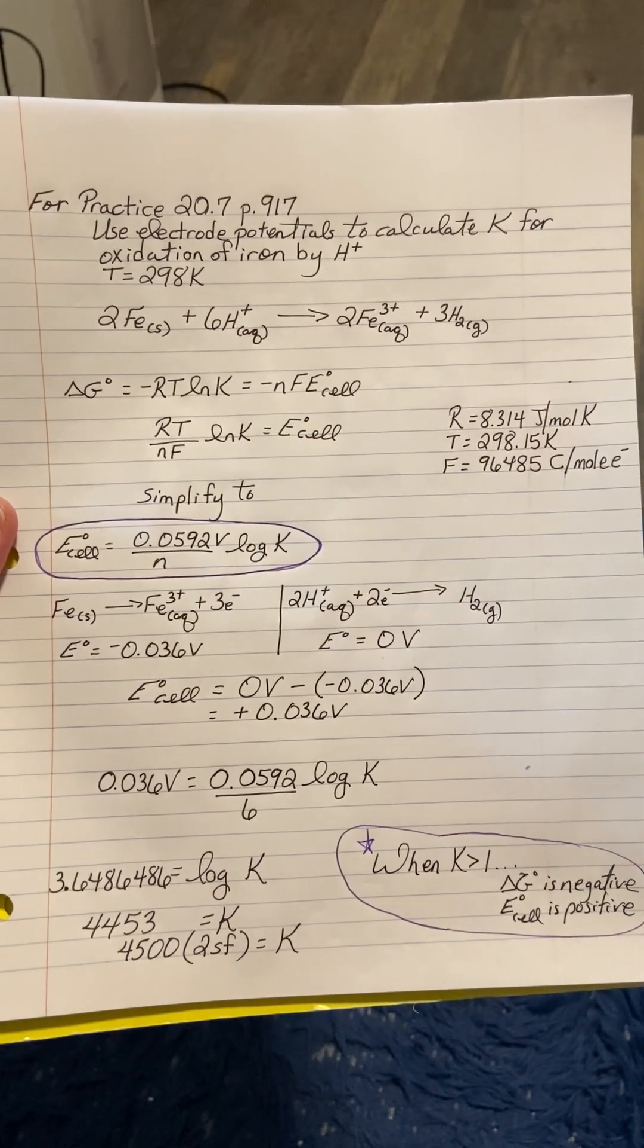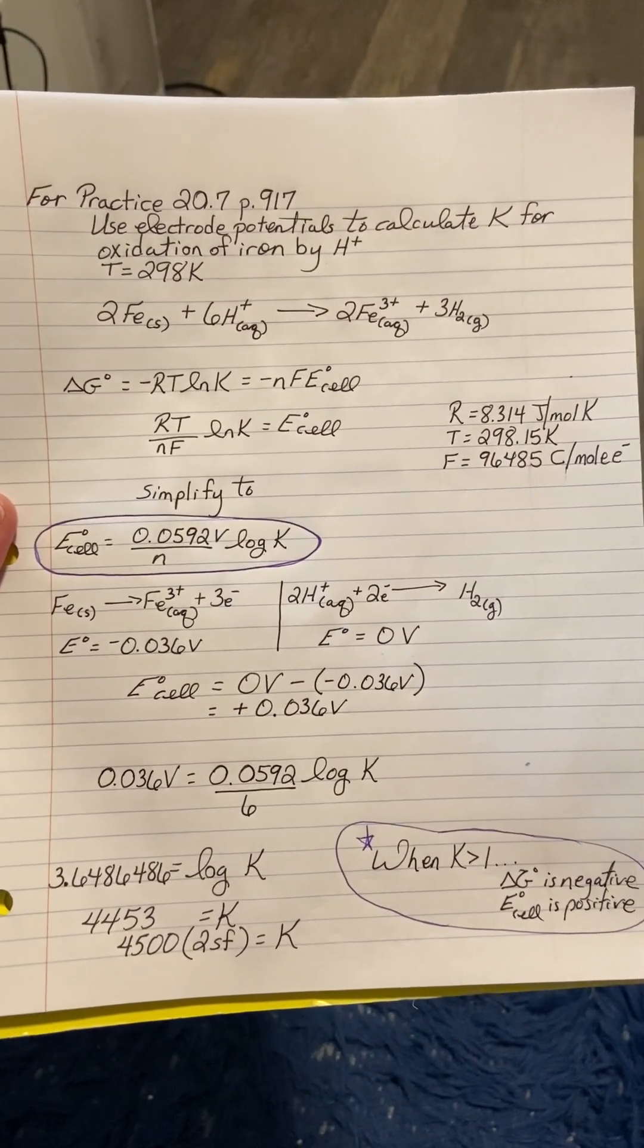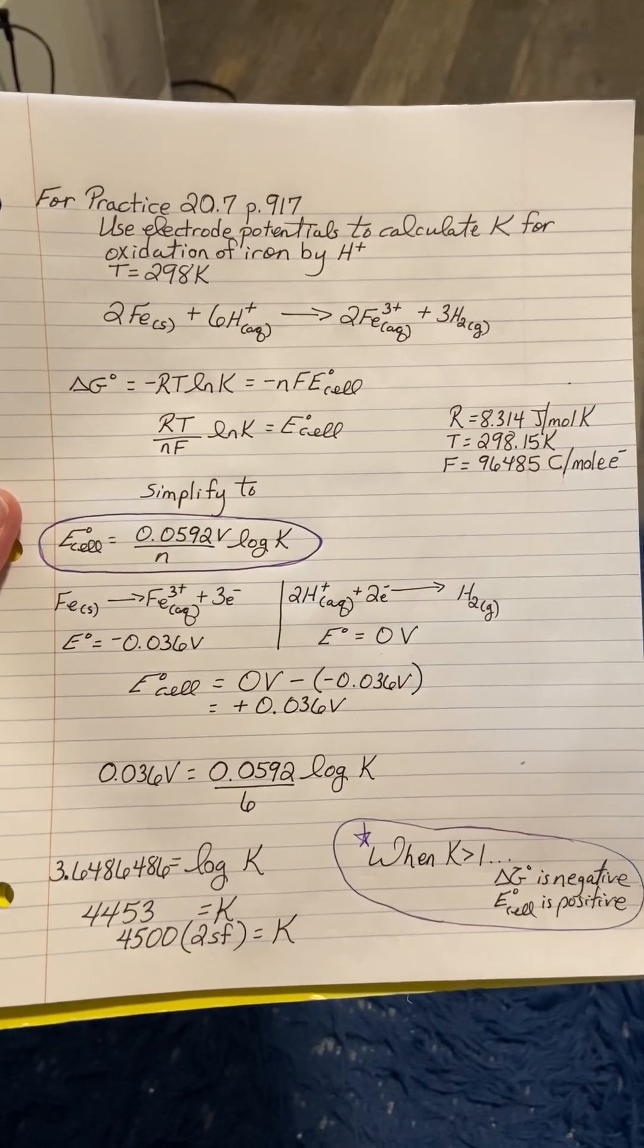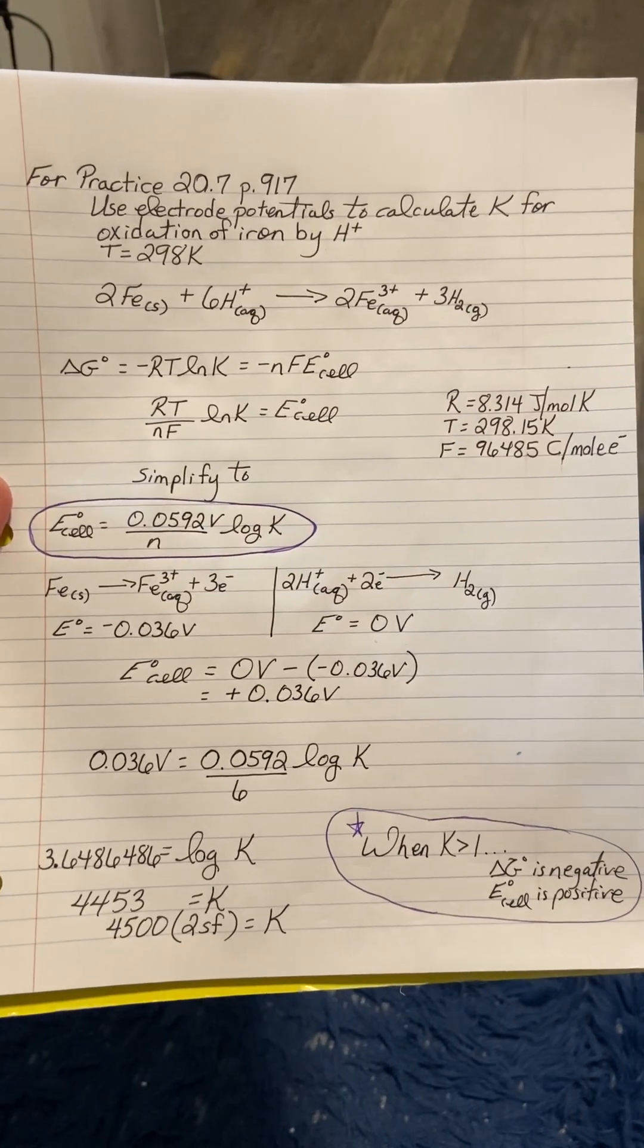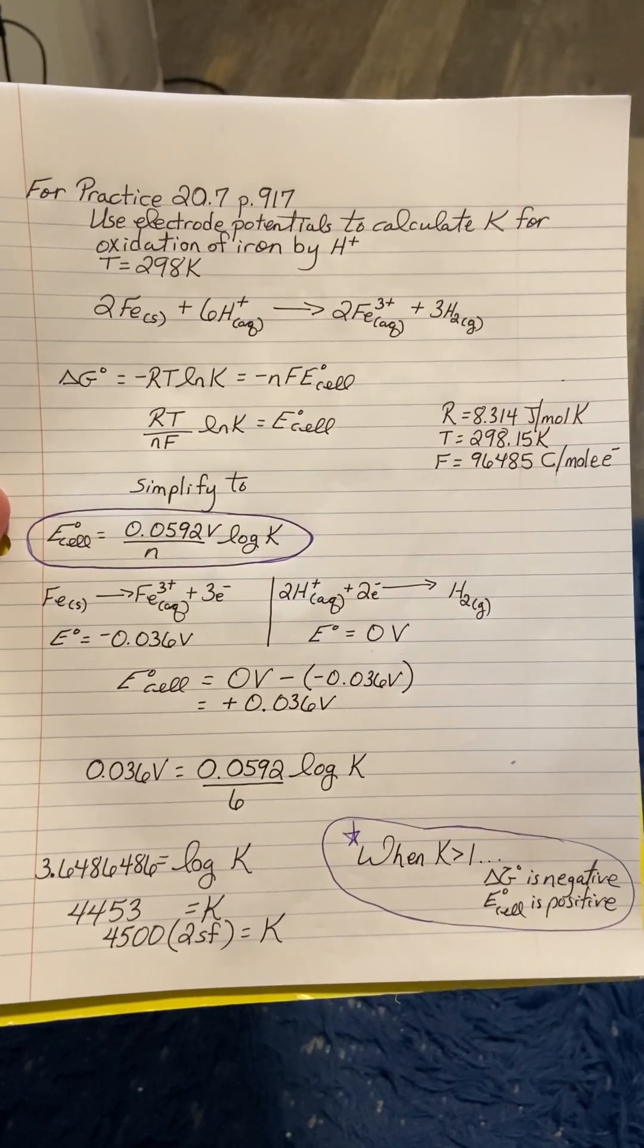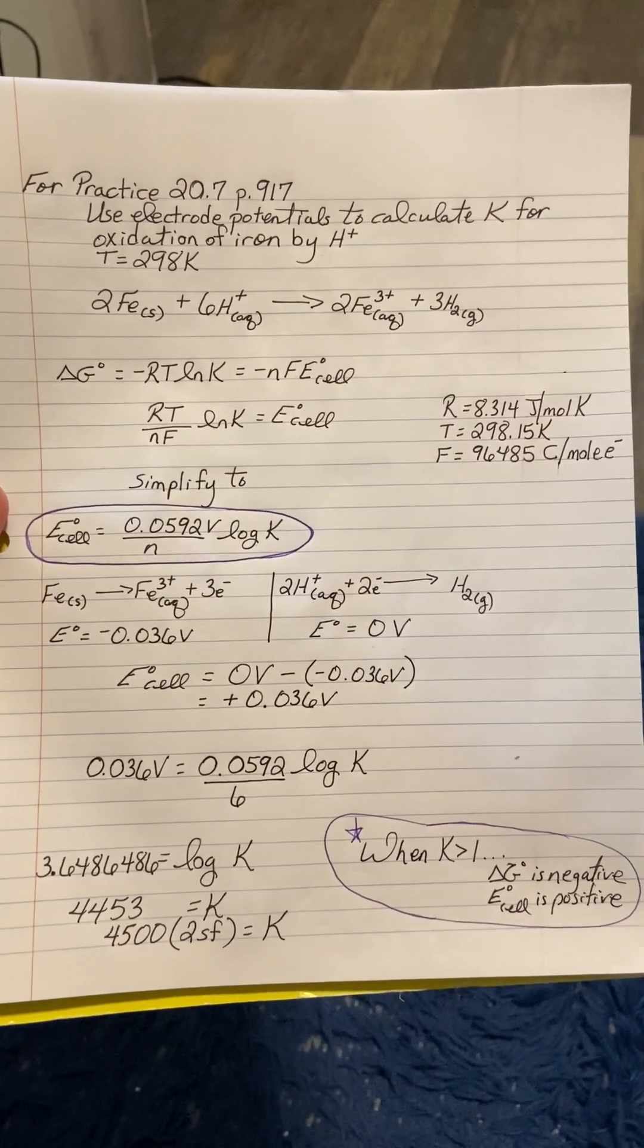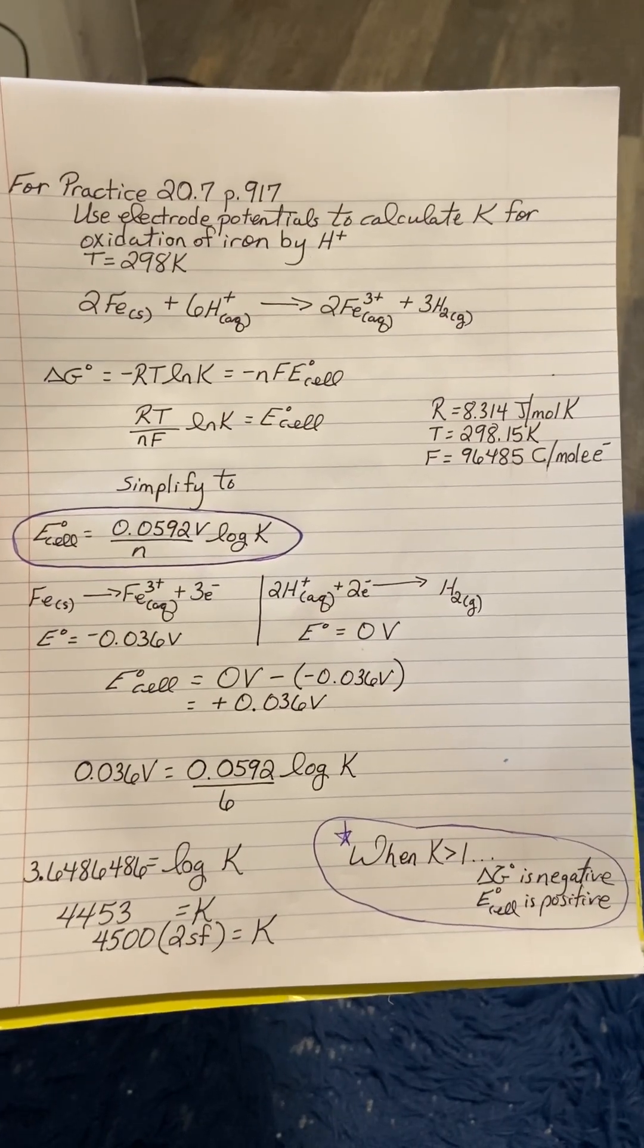In this problem we want to use the electrode potentials, the reference table with reduction potentials, to calculate K, the equilibrium constant for the oxidation of iron by hydrogen at the standard temperature.